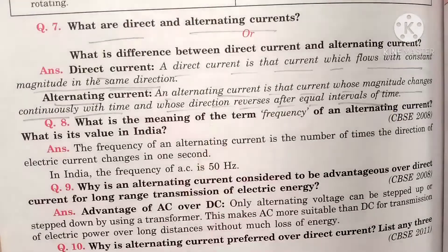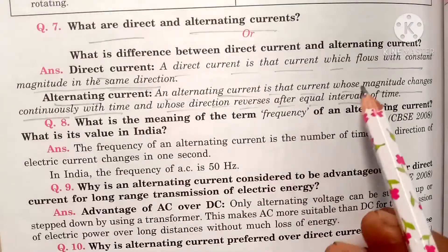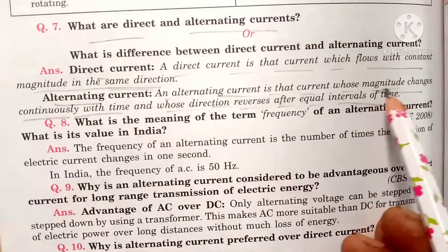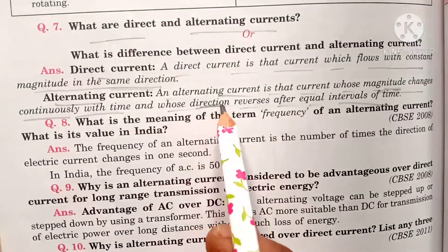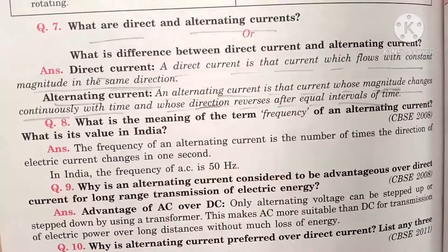For alternating current, its magnitude will change and its direction will also change.